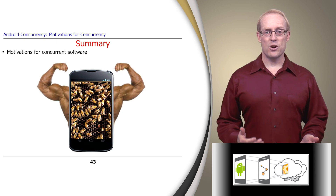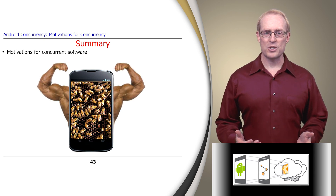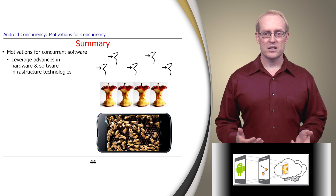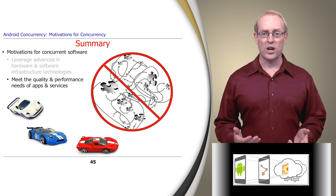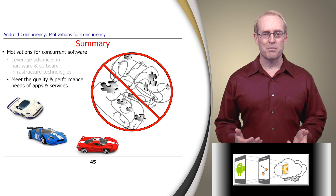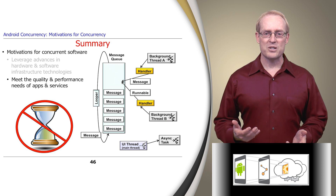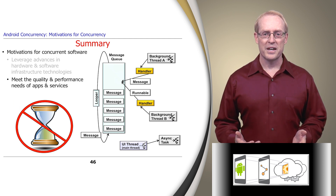In summary, there are several motivations for developing concurrent software for mobile devices. It helps developers effectively leverage technology advances, such as Moore's Law and other means by which commoditized hardware and software gets better, faster, and cheaper at a regular pace. Concurrency also helps developers meet the quality and performance needs of their applications and services by going beyond what's provided by lower-level infrastructure software and hardware. For example, concurrency allows developers to structure their software so it's more responsive to user interaction patterns, as well as easier to understand and evolve over the software lifecycle.